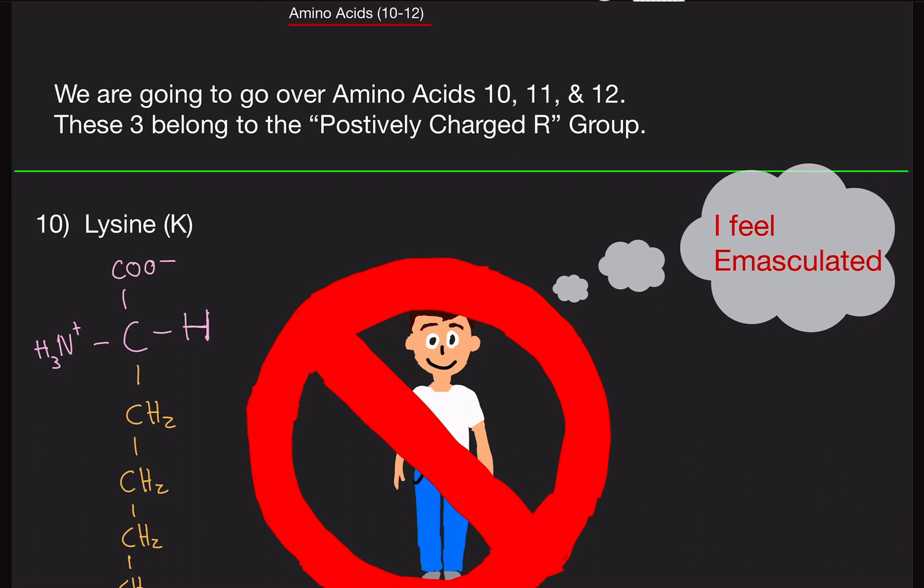Just a little heads up: when I mean amino acids 10, 11, 12, I'm making up these numbers. There are 20 amino acids, but I'm numbering these from easiest to hardest. This is not the official list - I'm giving it the number, but the actual abbreviation is the letter. That's how you define these amino acids.